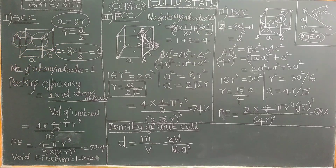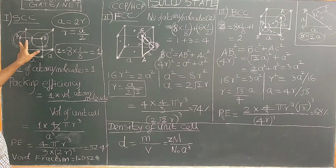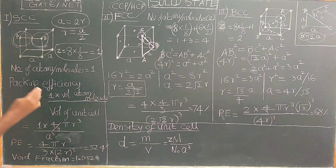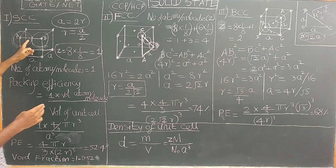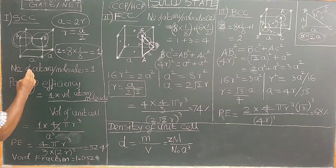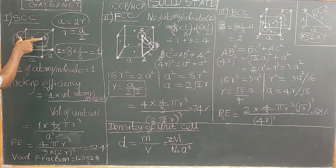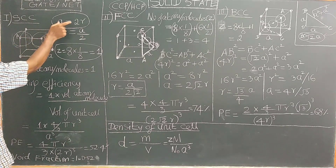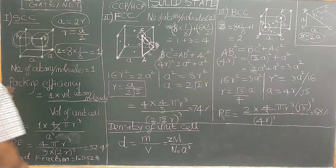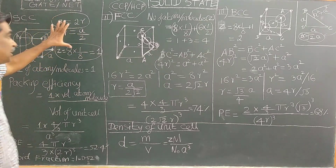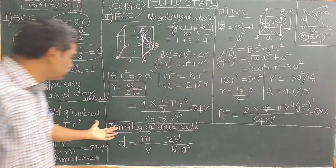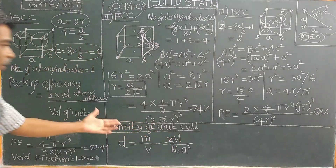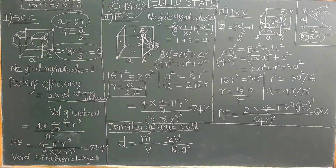Now, in simple cubic, the nearest neighbors touch each other. The distance between them equals A, the unit cell length. Therefore, A equals 2R, and R equals A divided by 2. This relation is very, very important — when you solve the density of the unit cell or other problems, it will be required.